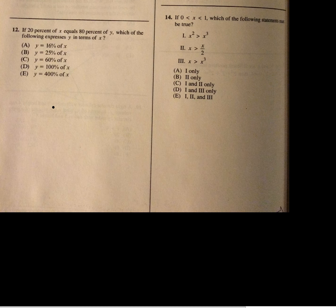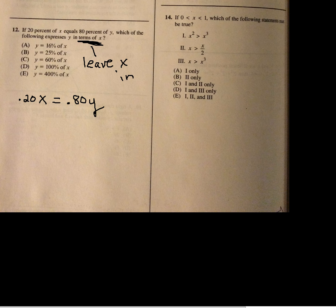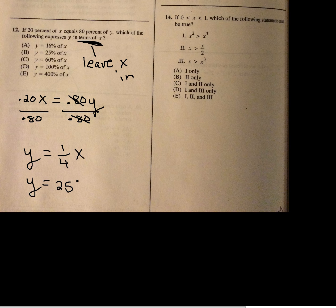A percent problem: 20% of X equals 80% of Y, so 0.2X equals 0.8Y. Which of the following expresses Y in terms of X? Divide both sides by 0.8: Y equals 0.2 divided by 0.8, which is one fourth, or 0.25. So Y equals 25% of X.